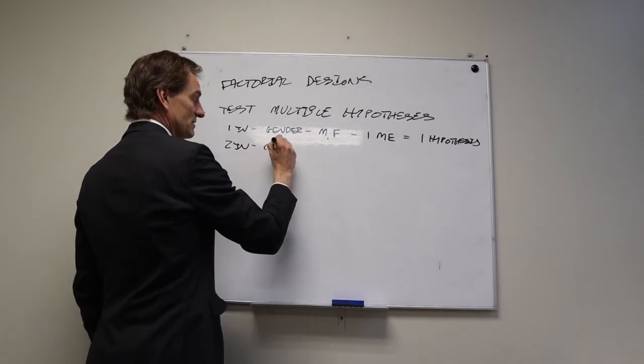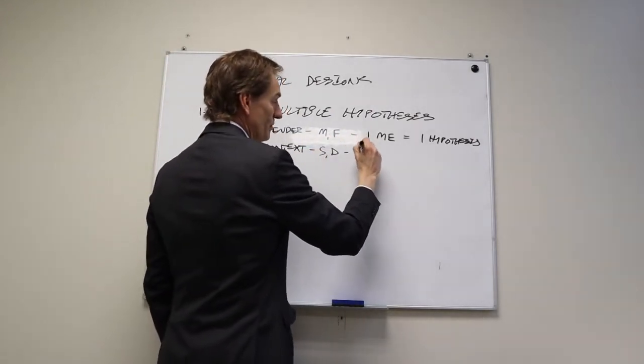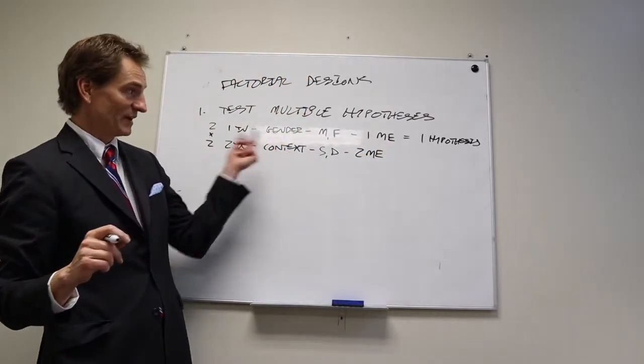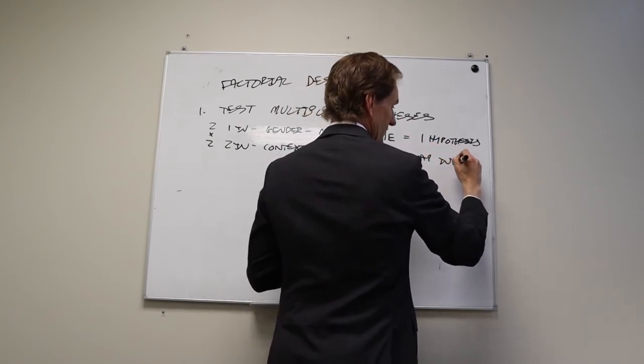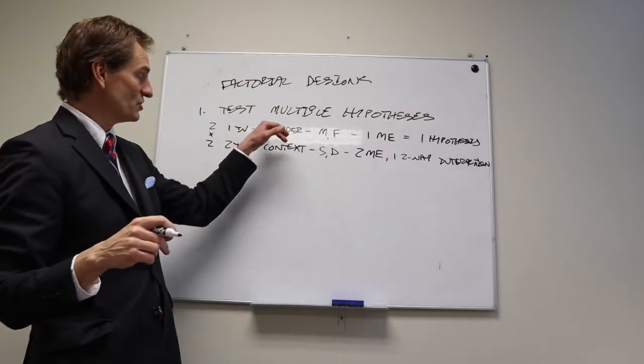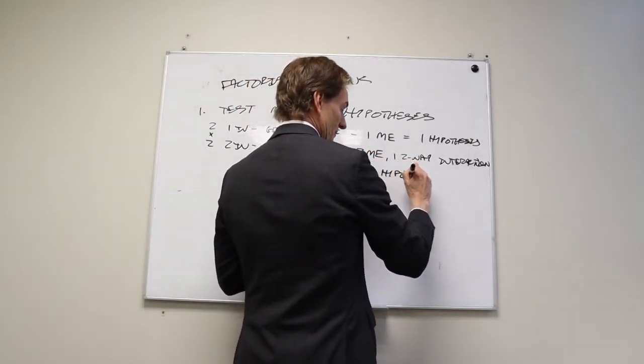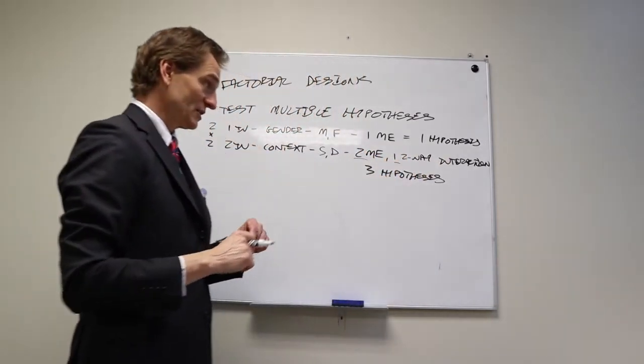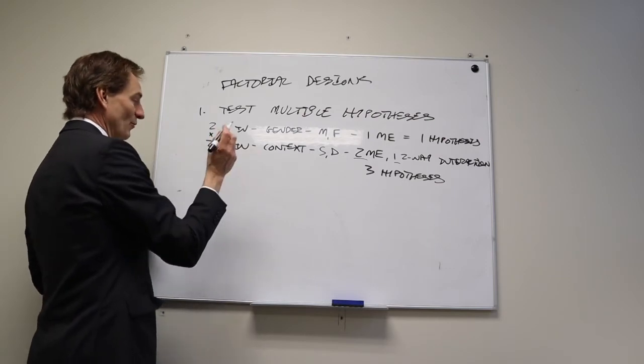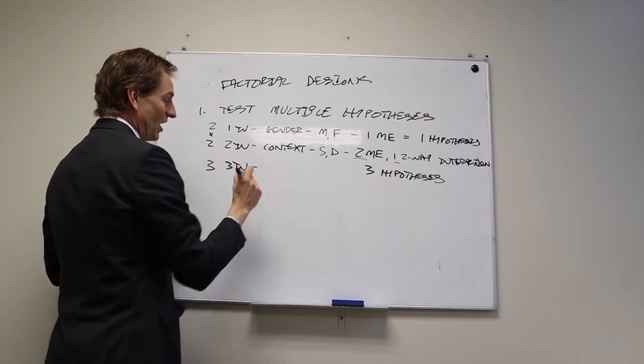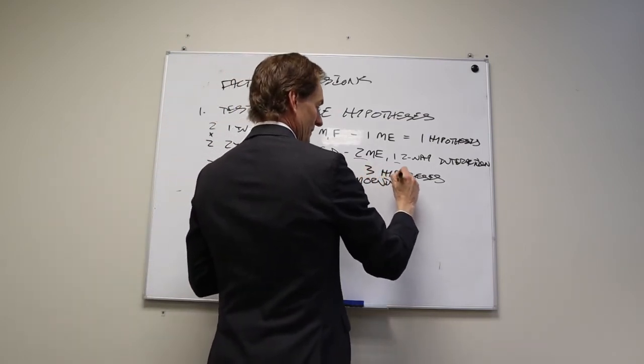If we had a second independent variable like context - sick or drunk - that's our two by two. Now we have two main effects, the main effect for gender and the main effect for context, and we also have one two-way interaction. That gives us a total of three hypotheses. Now we've tripled the number of hypotheses we can test. Let's add our third independent variable, time of day - morning, afternoon, and night.